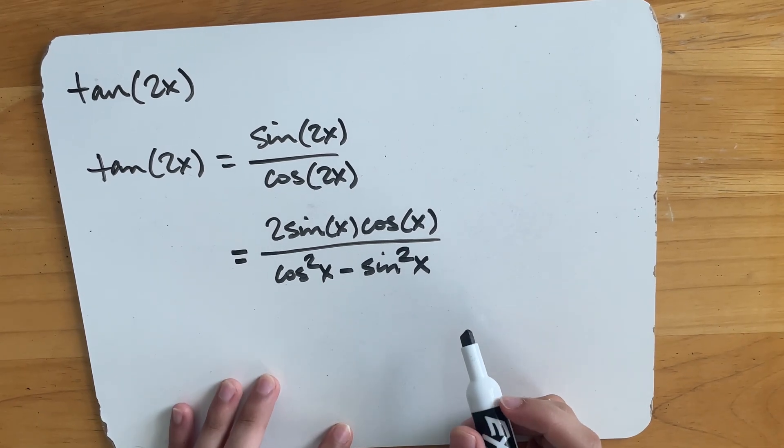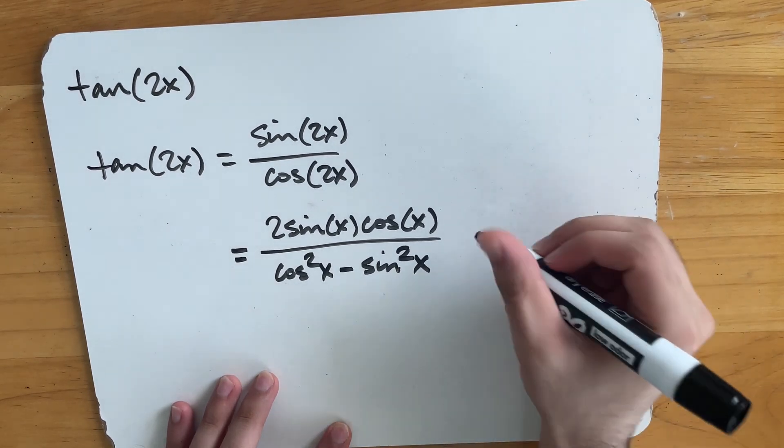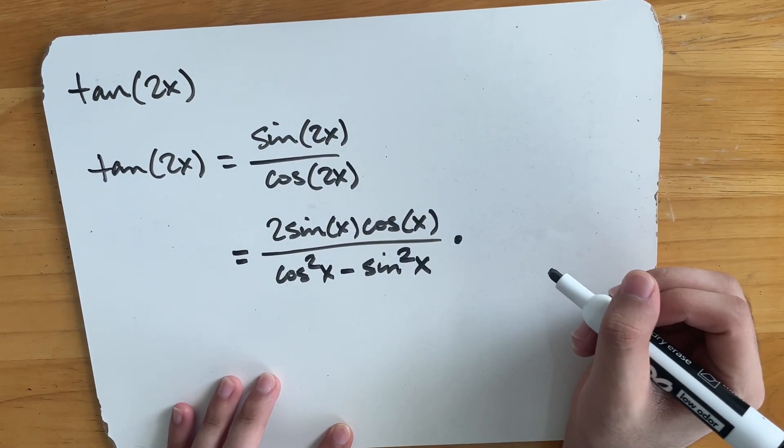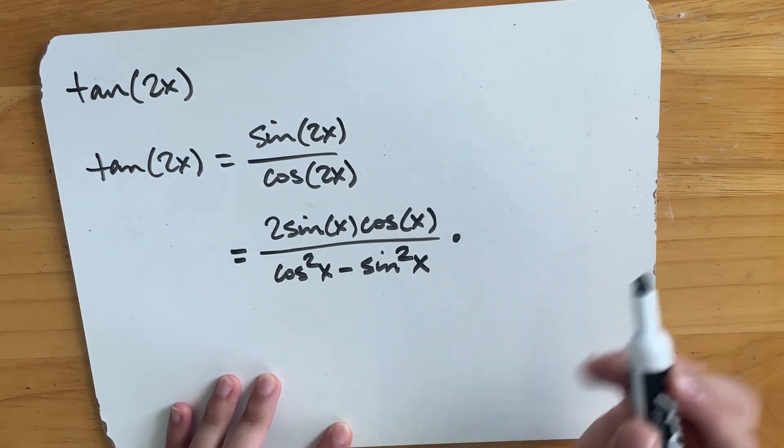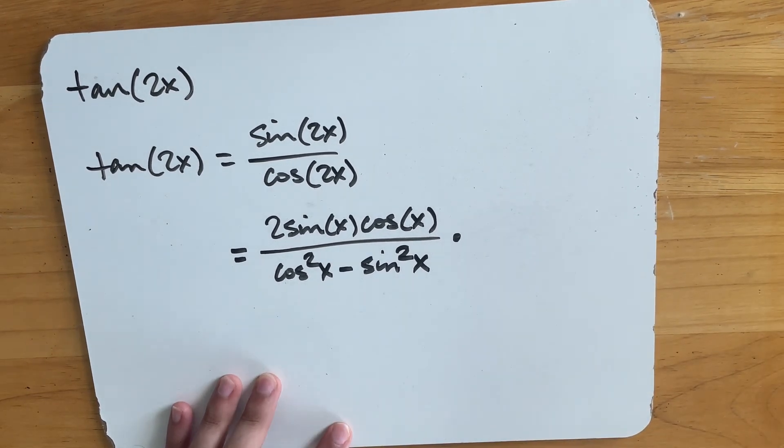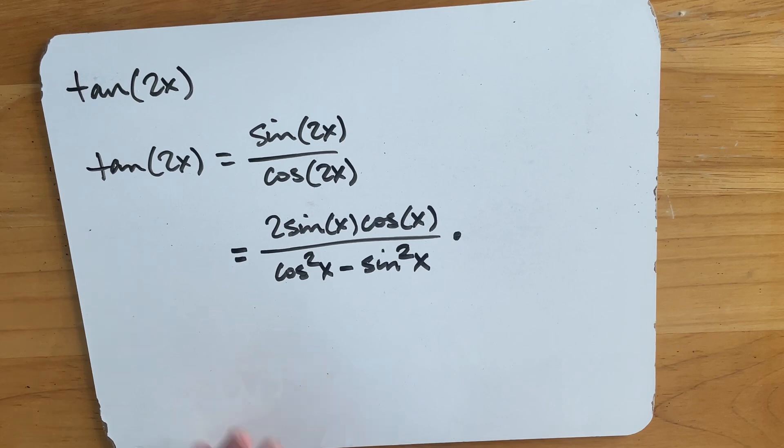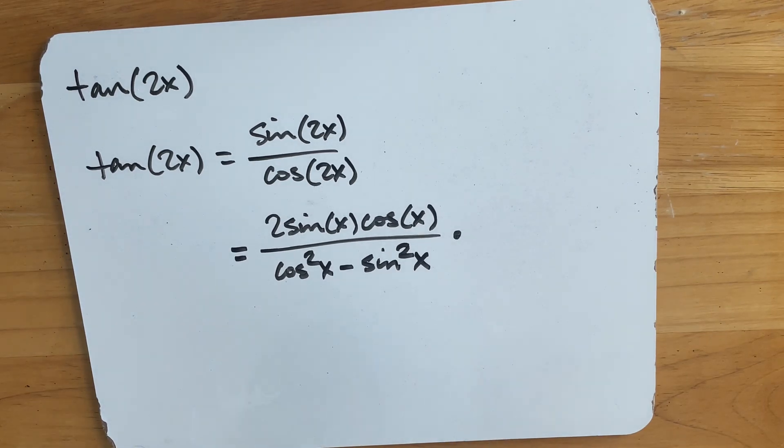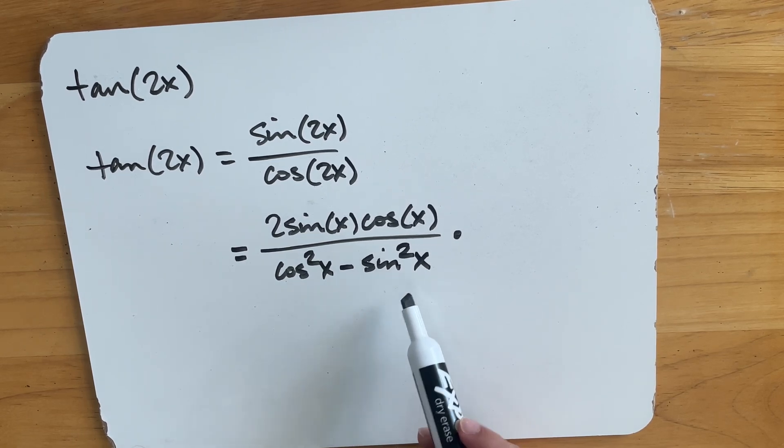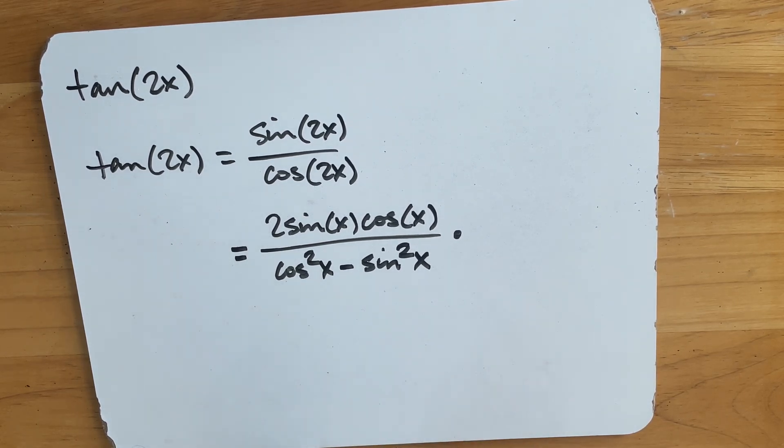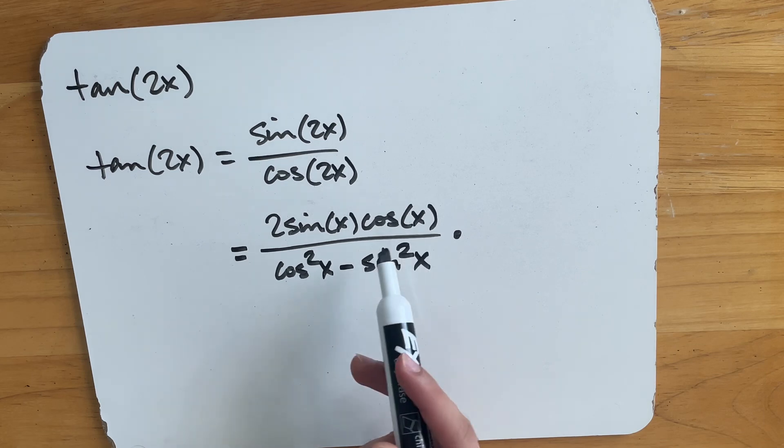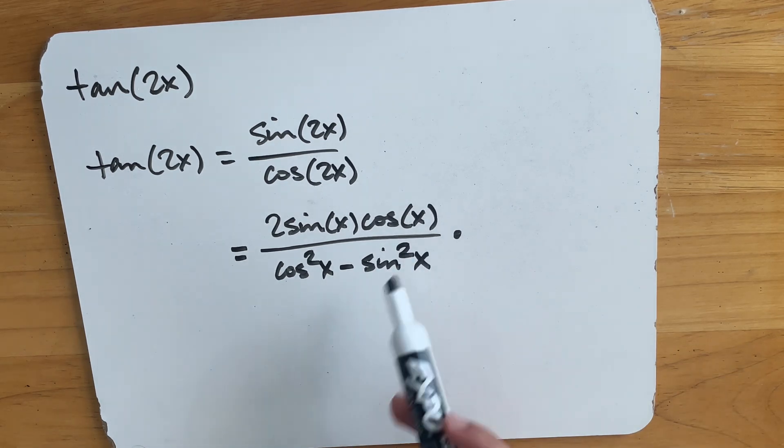So for option 2, what we're going to do is actually divide the top and bottom by cosine squared x. Because if we divide the top and bottom by cosine squared x, you'll notice this cosine squared x will become a 1. This sine squared x will turn into a tan squared x because sine x over cosine x. And then a cosine x will magically disappear from up here and we'll get probably like a tan of x.